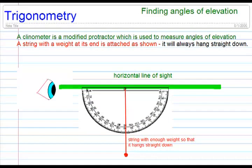In this video we're going to be showing how you can use a simple object to find angles of elevation. There are devices called clinometers which are available commercially, a little bit more sophisticated than what we're showing you here.